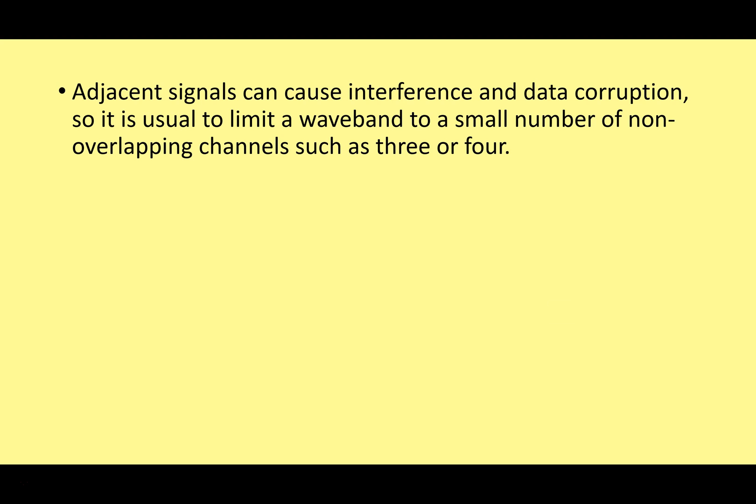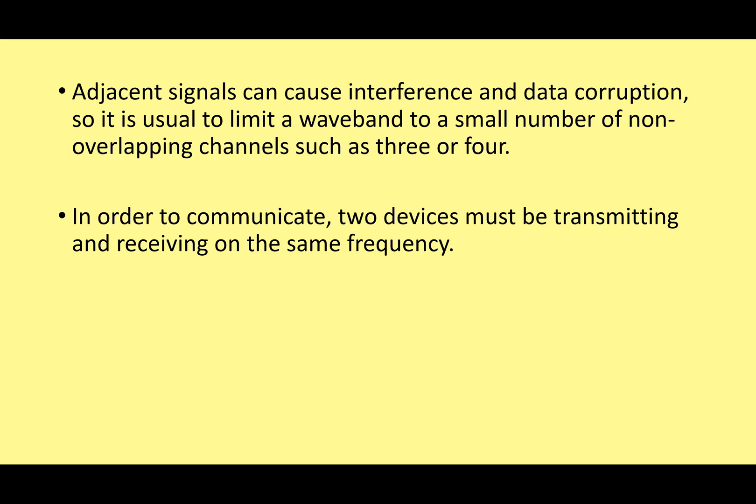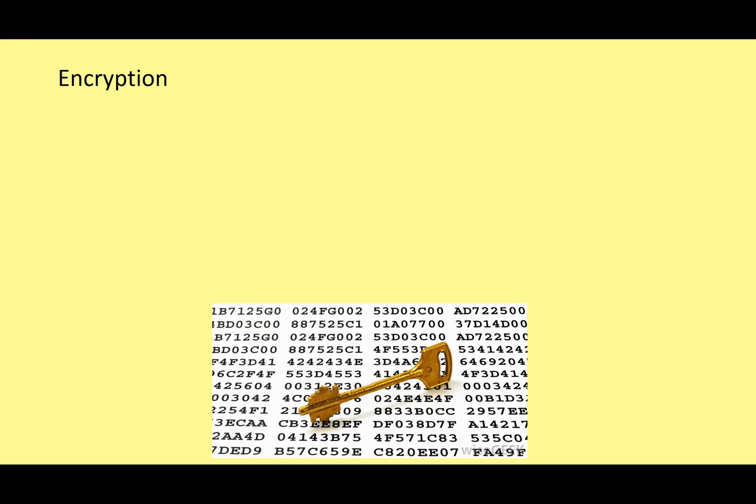You can get interference and data corruption if adjacent channels are being used nearby. Imagine you're transmitting on channel 3, one neighbor is on channel 2 and another is on channel 4 — your signals could interfere and you'd get poor upload and download speeds. Also, in order to communicate, two devices must be transmitting and receiving on the same frequency, so your laptop and router must operate on the same channel.